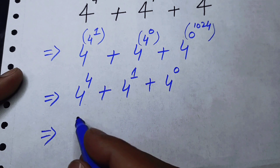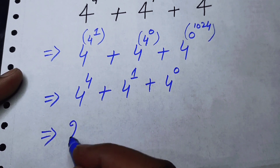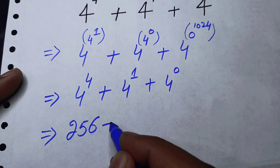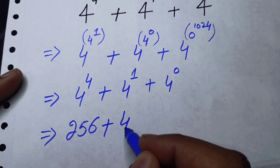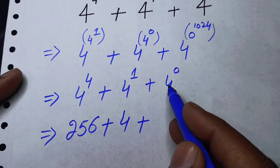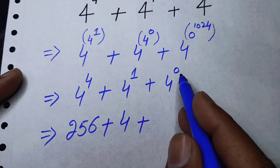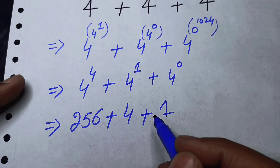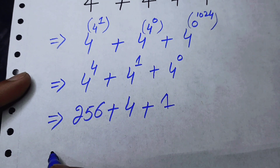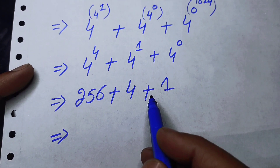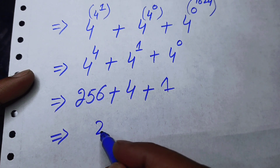4 to the power of 4 becomes 256, plus 4 to the power of 1 becomes 4, and something to the power of 0 is equal to 1, so it becomes 1. Finally we add all these terms.